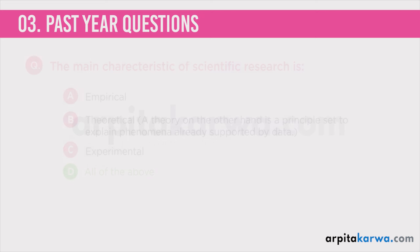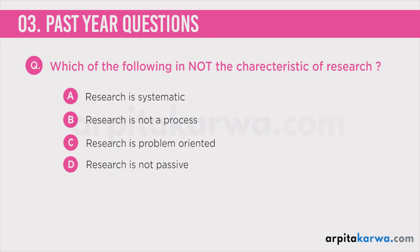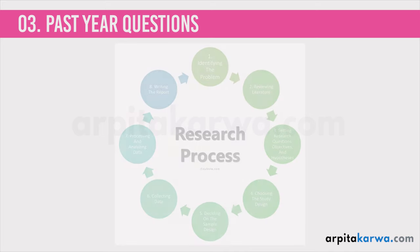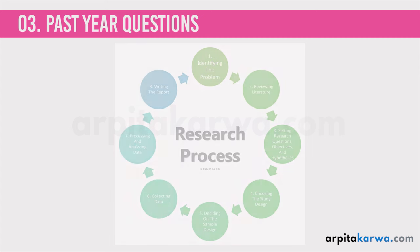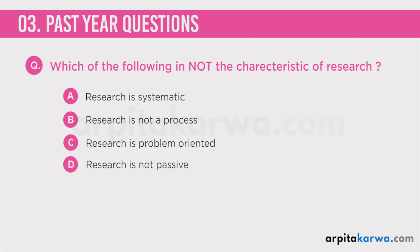Question 2: Which of the following is NOT a characteristic of research? Research is systematic — true. Research is not a process — this is wrong, because research IS a systematic and logically planned process. Research is problem oriented — yes, research is always directed towards solving a problem. Research is not passive — yes, research is an active process. So option B is the incorrect statement.